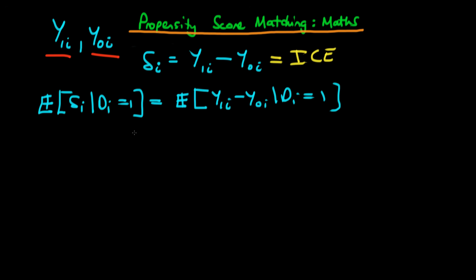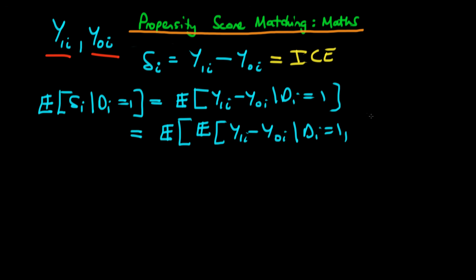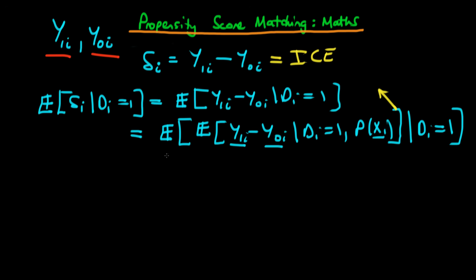We can rewrite this using the law of iterated expectations as the expectation of the expectation of y1i minus y0i, given that di is equal to 1 and also given the individual propensity scores. We then condition on di equal to 1 to ensure equality with the previous line. We can separate out this inner expectation into the terms that involve y1i and those that involve y0i.